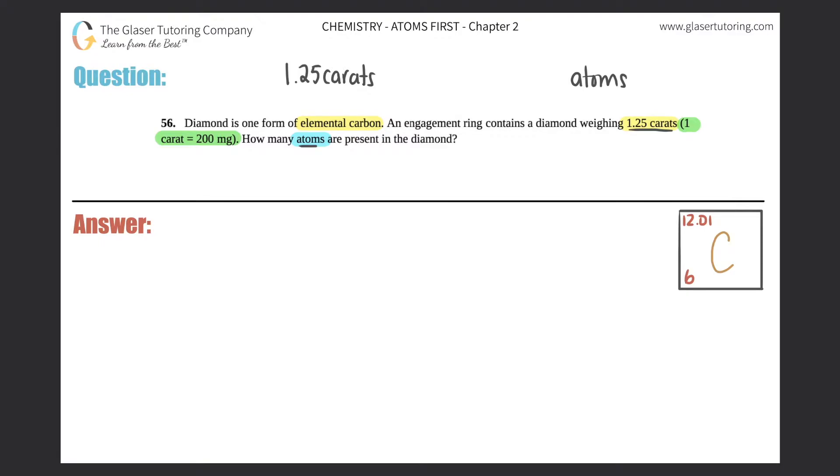They're telling us that a diamond is just a form of elemental carbon. If they say something is elemental and then they give an element, it's just a fancy way of saying it's just made of that element. So it would just be made of carbon. Technically this would be carats of carbon, and they're looking for atoms of carbon.